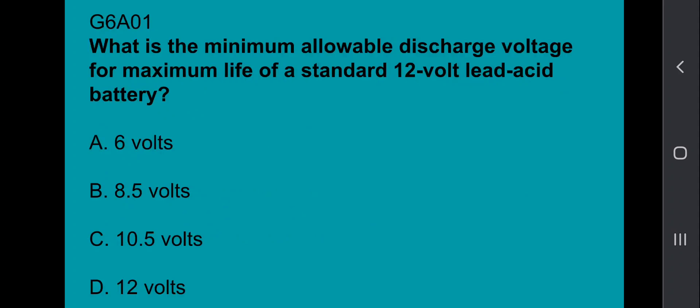G6A01: What is the minimum allowable discharge voltage for maximum life of a standard 12 volt lead acid battery? That's going to be 10.5 volts.